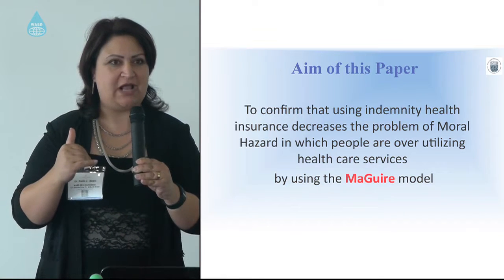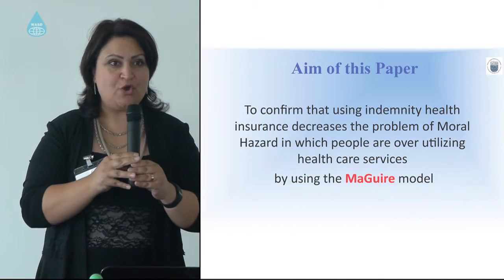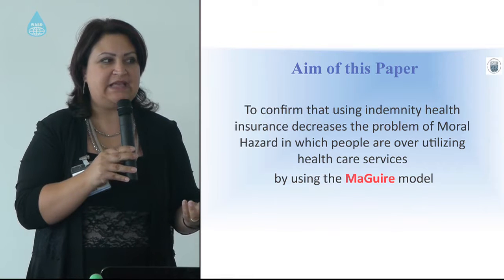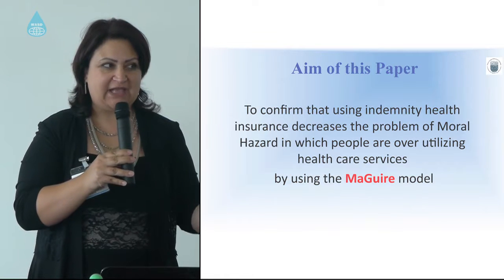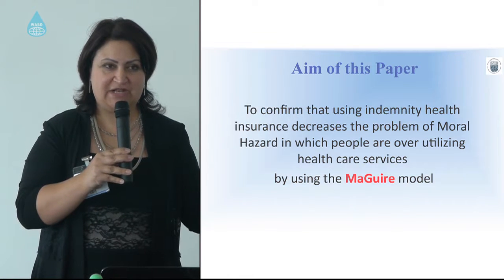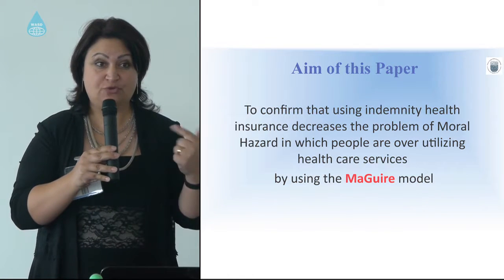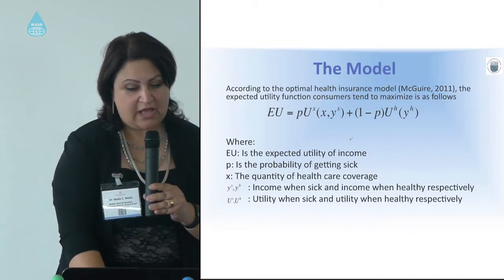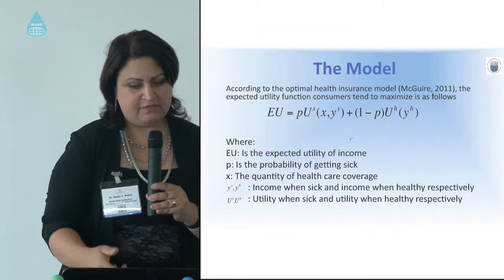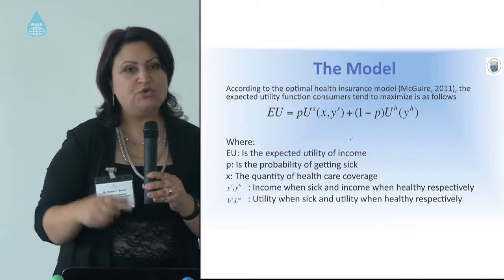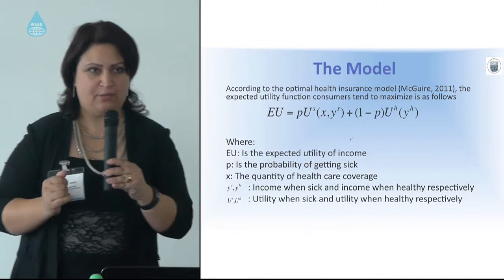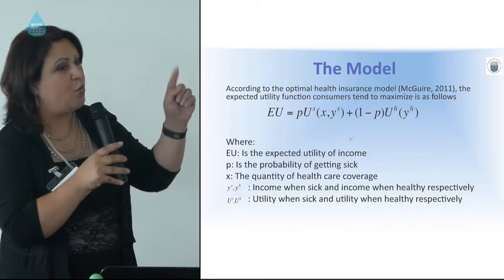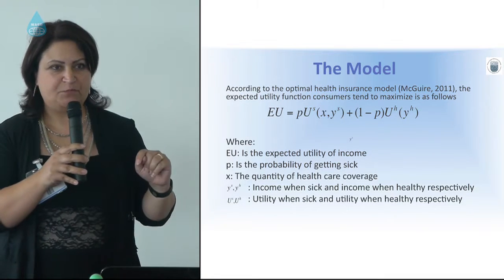I assume that if you pay out of pocket at the beginning and then get reimbursed, that will reduce moral hazard, because you will be supervising the acts of the physician and also supervising your own acts. To prove this, I used a mathematical model based on the McGuire model, which is a very popular model in health insurance.